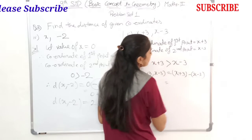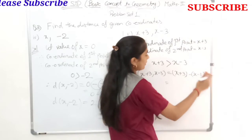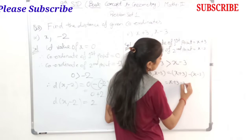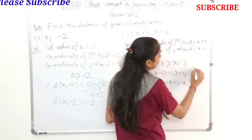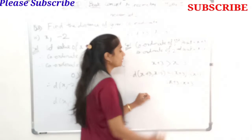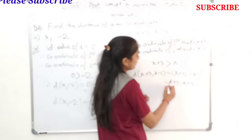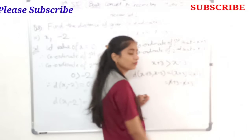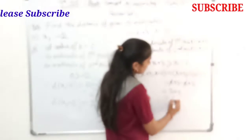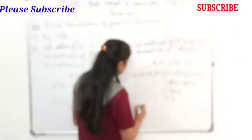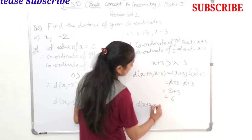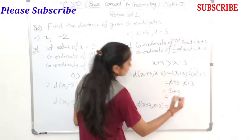We multiply the bracket with minus and open the bracket: x plus 3 minus open bracket x minus 3. Positive minus gives minus x, and minus minus gives plus 3. Now x and minus x cancel, leaving 3 plus 3. The answer is 6. Therefore, distance of x plus 3 and x minus 3 is 6. You have to solve all questions this way.